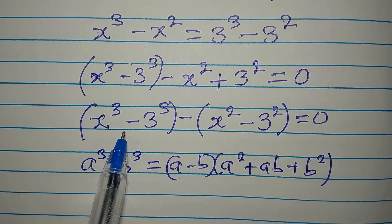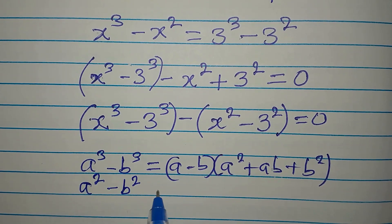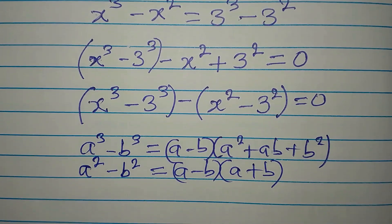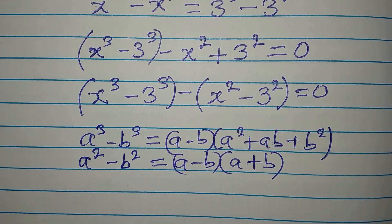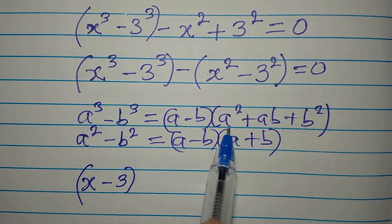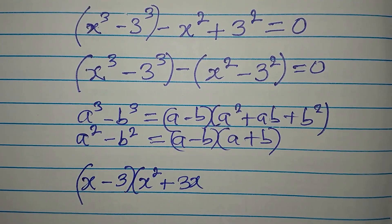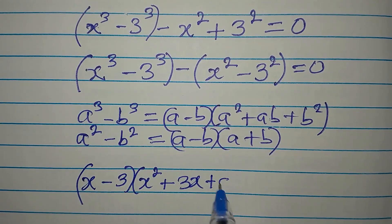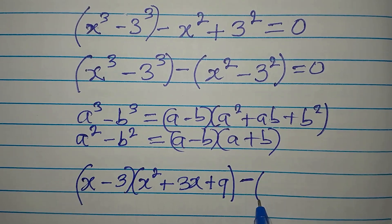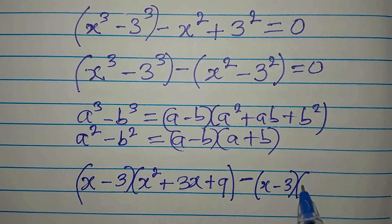For the difference of two squares, everybody knows that a squared minus b squared equals a minus b times a plus b. Our a minus b becomes x minus 3. So applying the difference of two cubes: x minus 3, times x squared plus 3x plus 9, then subtracting the difference of two squares expressed as x minus 3 times x plus 3.